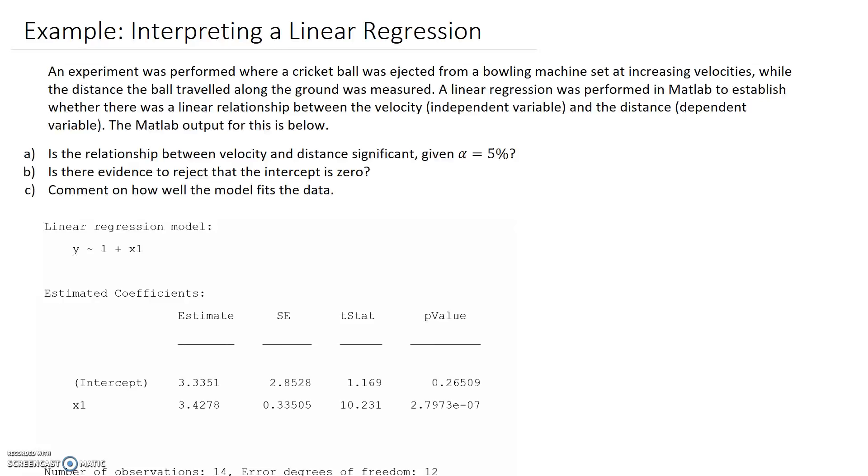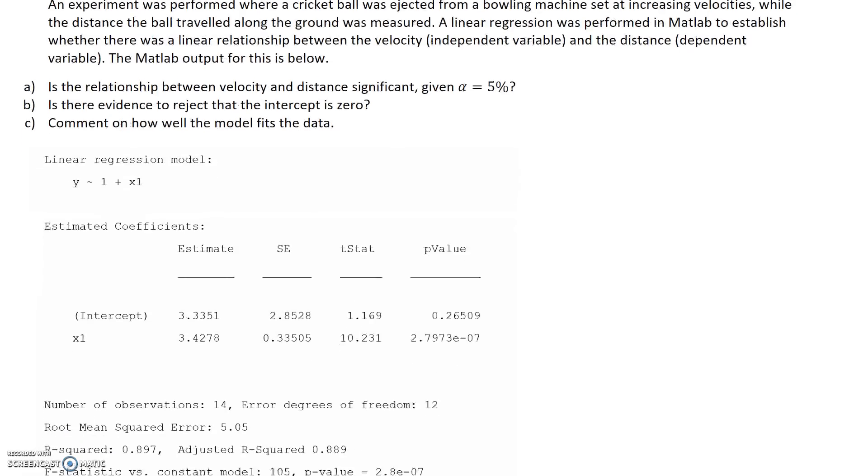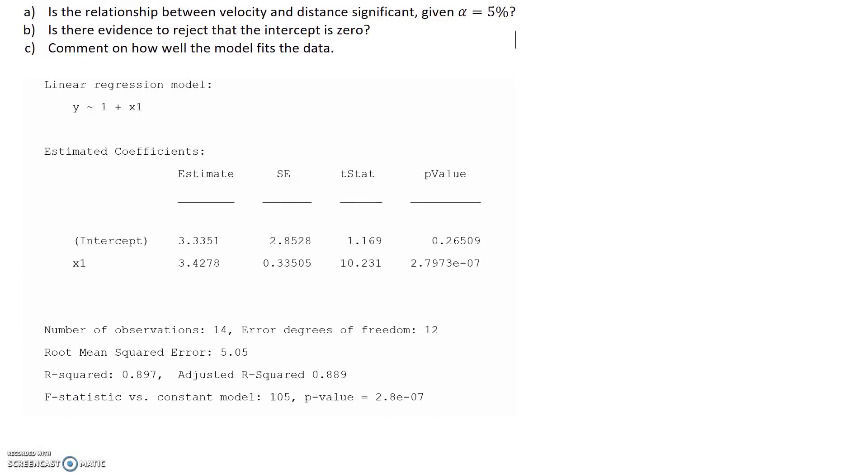MATLAB output is shown down here, and we're going to use this to answer a couple of questions. The first question is asking us about the relationship between velocity and distance, and whether it's significant, given a 5% level of significance to make that decision. Coming down to our MATLAB output, we can see here we've been given our linear regression model.